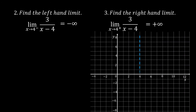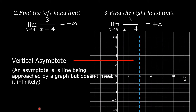Let us show the graph. The line x = 4 is the vertical asymptote. An asymptote is a line being approached by a graph but never met. As x approaches 4 from the left, the graph goes to negative infinity. And as x approaches 4 from the right, the graph goes to positive infinity.